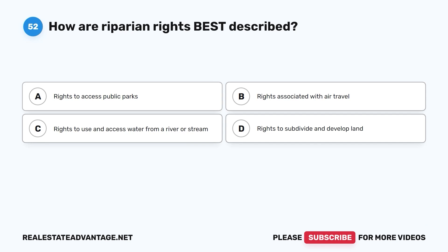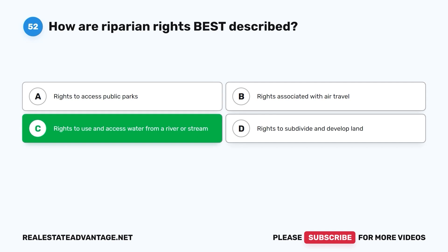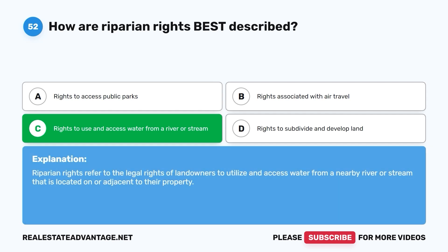Question 52: How are riparian rights best described? A. Rights to access public parks. B. Rights associated with air travel. C. Rights to use and access water from a river or stream. D. Rights to subdivide and develop land. The correct answer is C. Riparian rights refer to the legal rights of landowners to utilize and access water from a nearby river or stream located on or adjacent to their property.